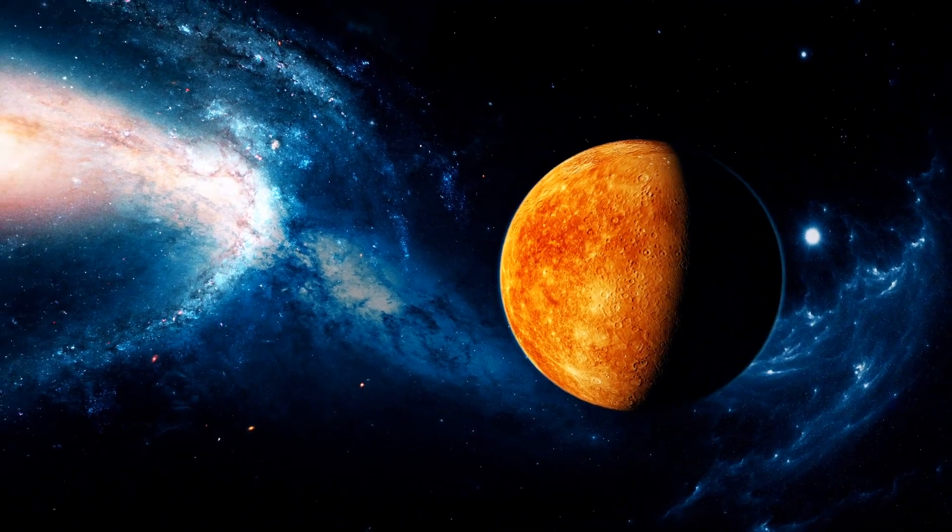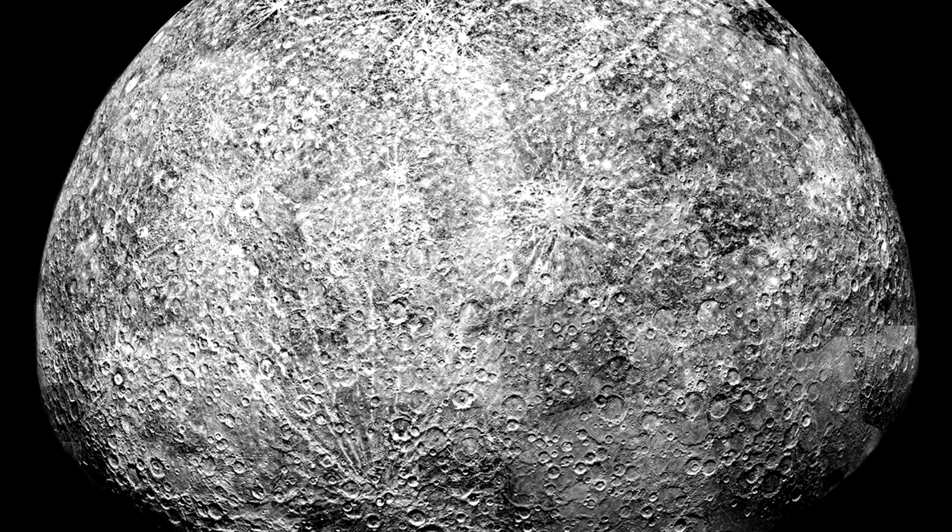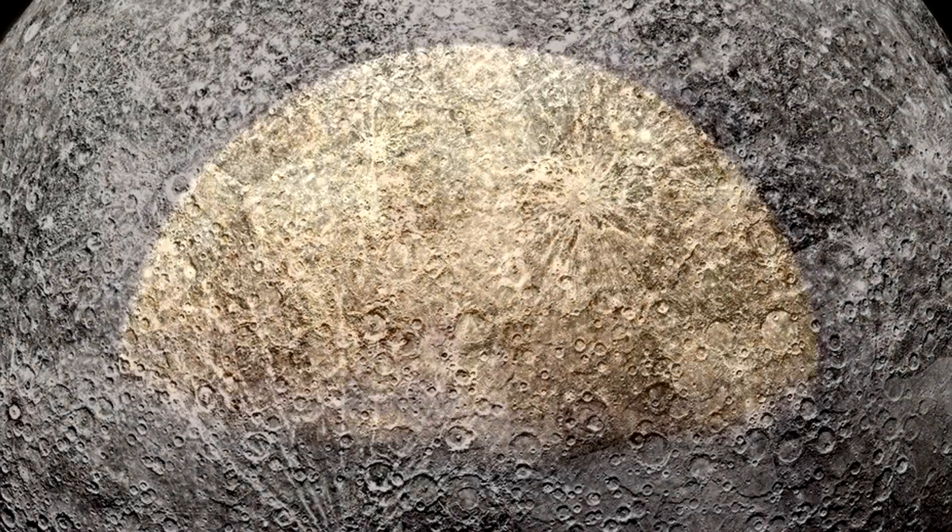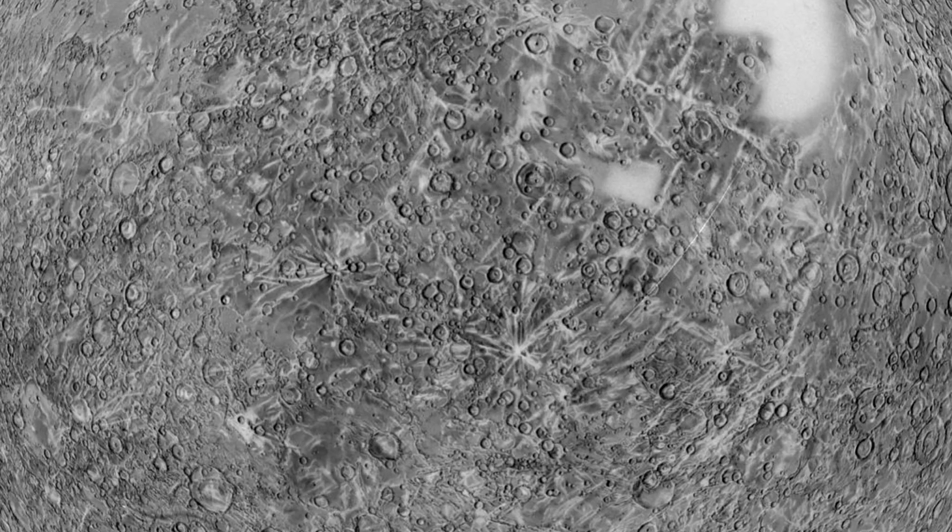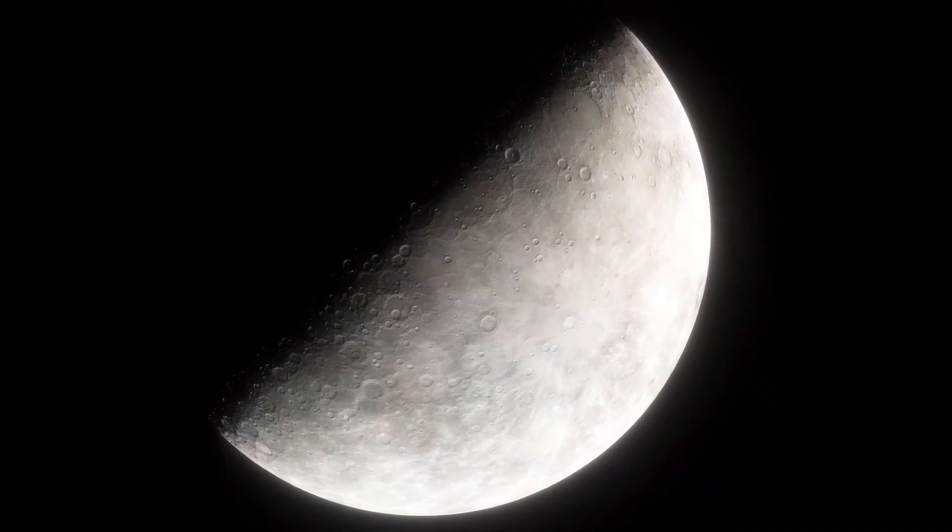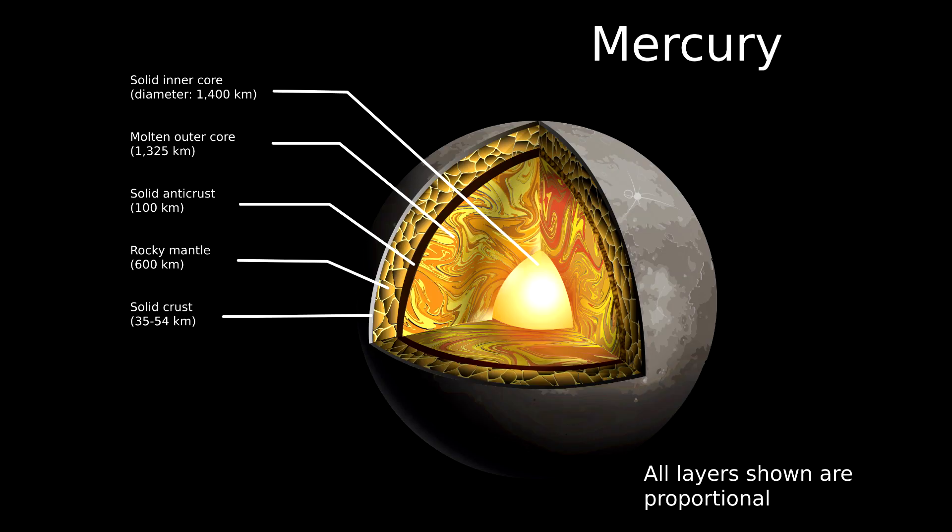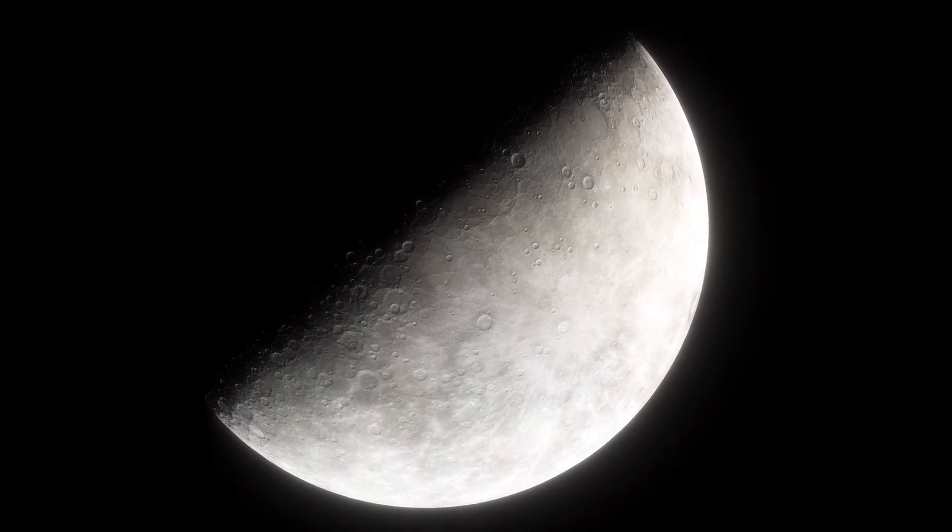Our first close look at Mercury came when Mariner 10 became the first spacecraft to visit the planet. During its flybys, Mariner 10 captured images of a cratered landscape marked by strange ridges and lines, bearing a strong resemblance to our Moon. This mission revealed Mercury's rough, cratered surface, a magnetic field stronger than anticipated, and an unexpectedly large core, challenging scientists' earlier assumptions.